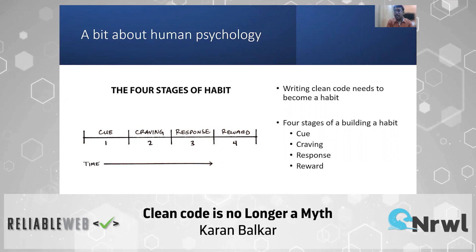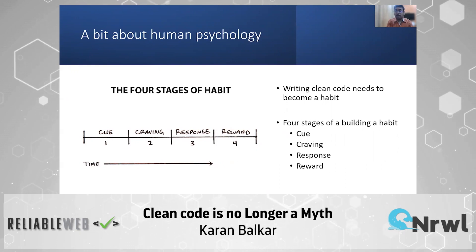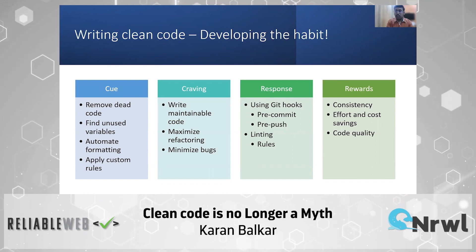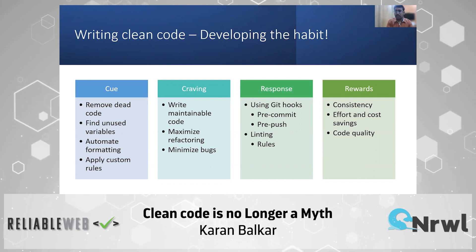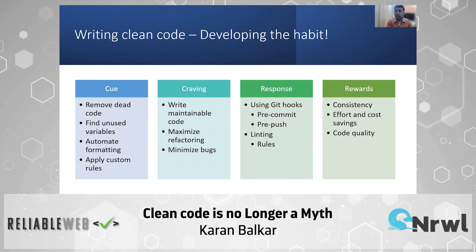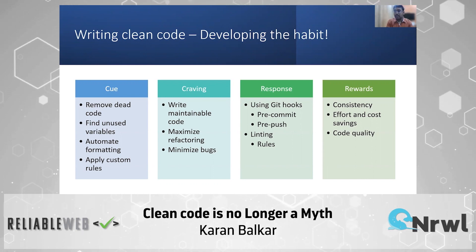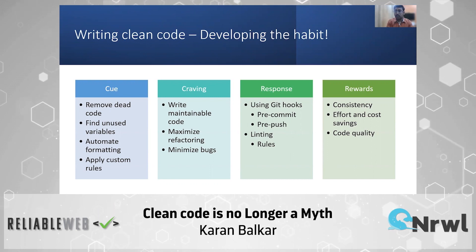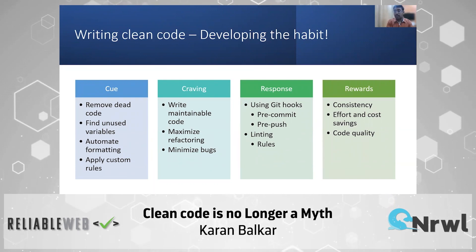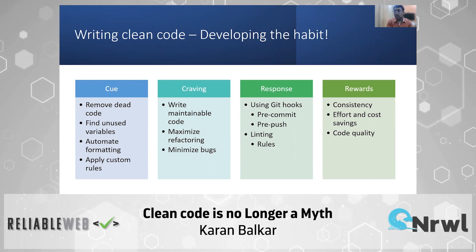Let's map the four stages of building a habit to writing clean code. The cue involves removing dead code, finding unused variables, automating the formatting of the code, and applying certain custom rules. The craving or motivation would be to write maintainable code, maximize refactoring, and minimize the number of bugs. In response, we would use techniques like githooks and linting. And the rewards of developing this habit would be achieving consistency, saving a lot of effort, and improving the overall code quality.